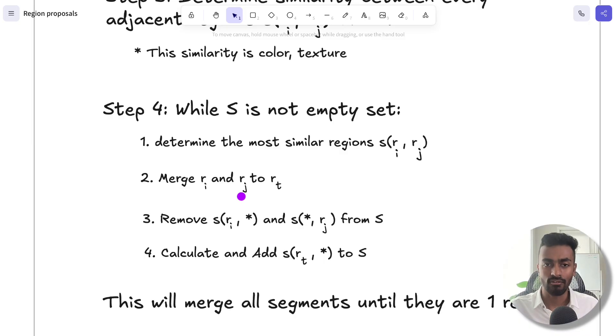So if there are Ri and Rj, they will merge to form this new region, RT. And because it's a new region now, we can remove all of the old similarity scores attached to the old regions, and then we calculate the new similarity scores for region RT with its surrounding regions. And so S now has a slightly less number of similarities here.